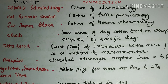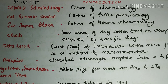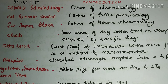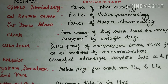The first scientist is Oswald Schmiedeberg, who is also known as the Father of Pharmacology. The second is Mr. Ramna Chopra, who is known as the Father of Indian Pharmacology. Sir James Black is the Father of Modern Pharmacology.